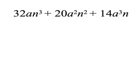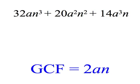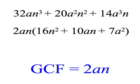Here's another one, a little more complicated. You probably look at the 32, the 20, and the 14, and you realize that each one of those is divisible by 2. And then for the variable a, the first term only has an a to the first, so that's the best we can do. And for the variable n, the last term only has an n, so our GCF is 2an. And now we divide that out, and there's the result: 2an times the quantity 16n squared plus 10an plus 7a squared.